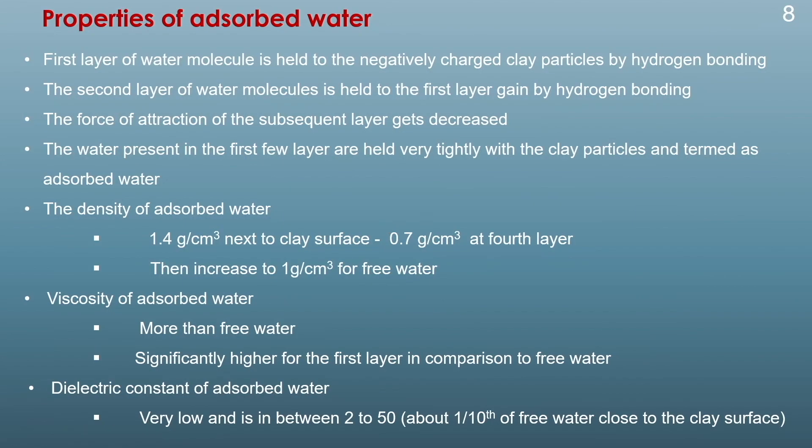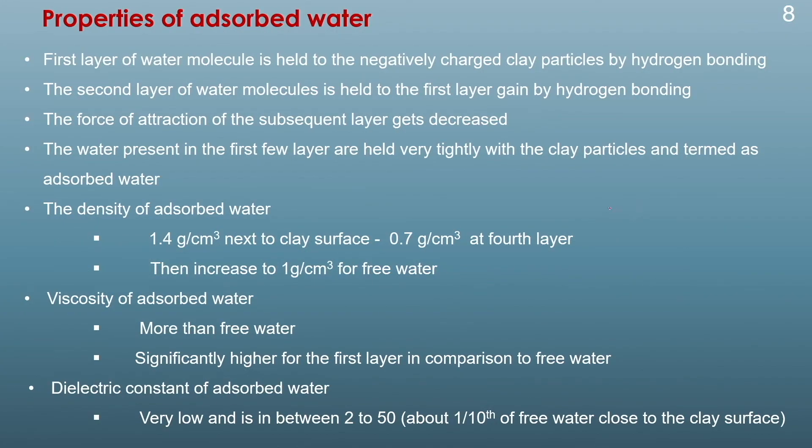There are two kinds of water: free water and diffuse double layer water. Apart from these, there is another layer called adsorbed water, which is strongly attached by the negative charge of the clay plates and also by hydrogen bonding between the clay plates and the water molecules.